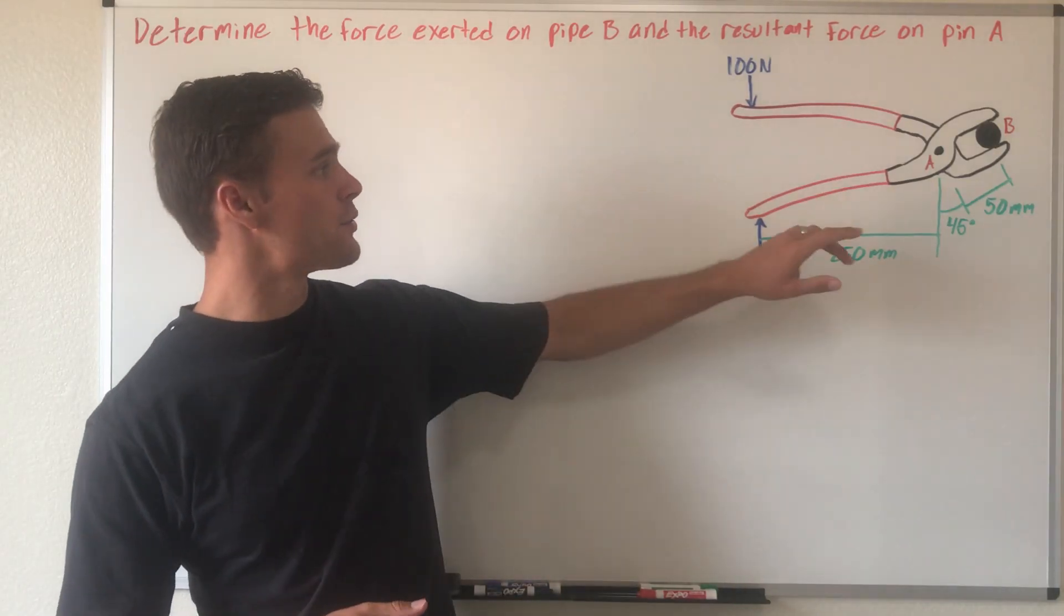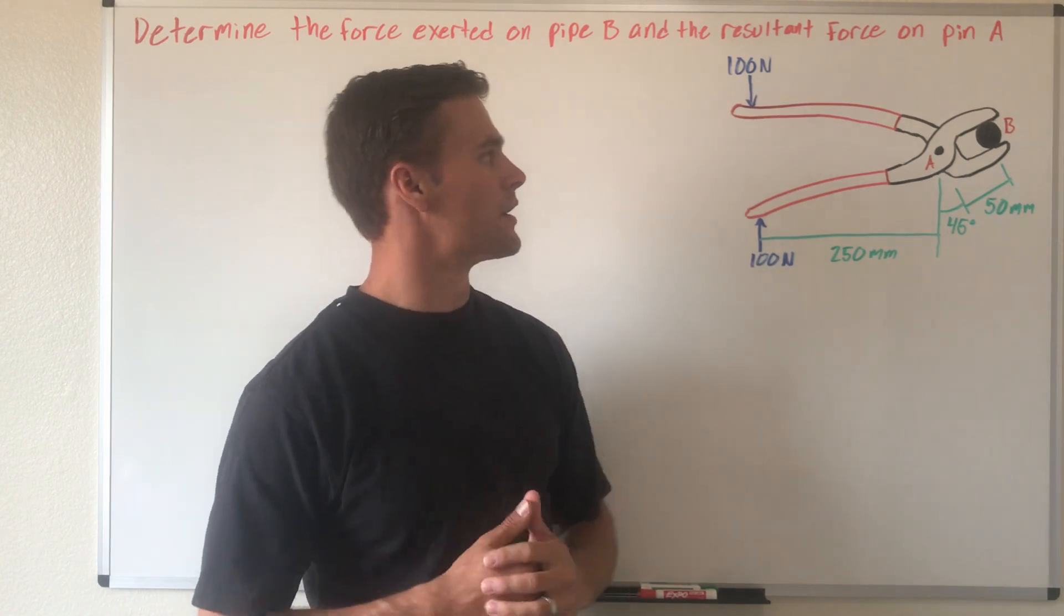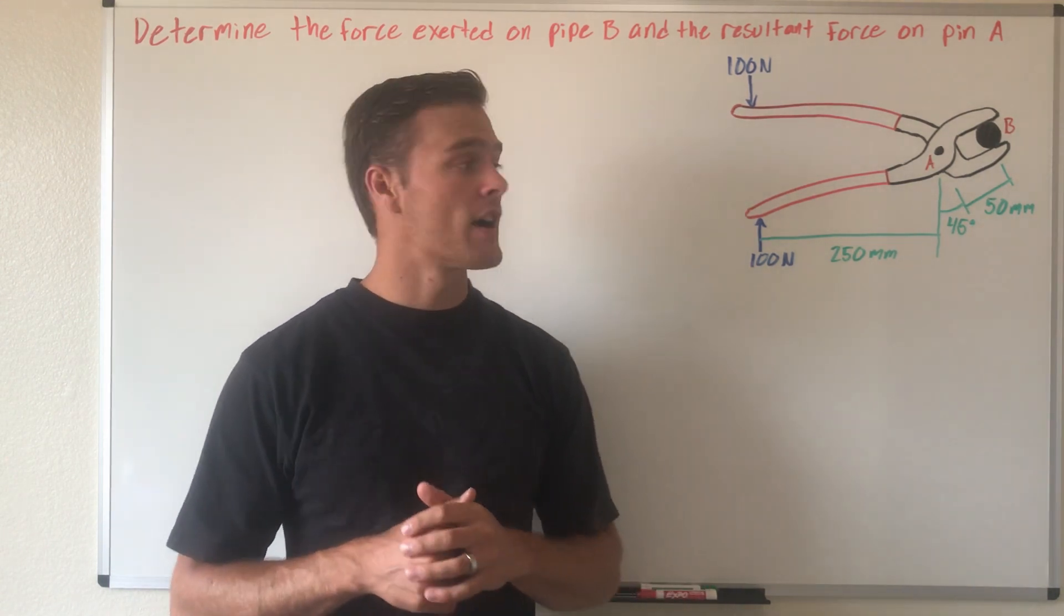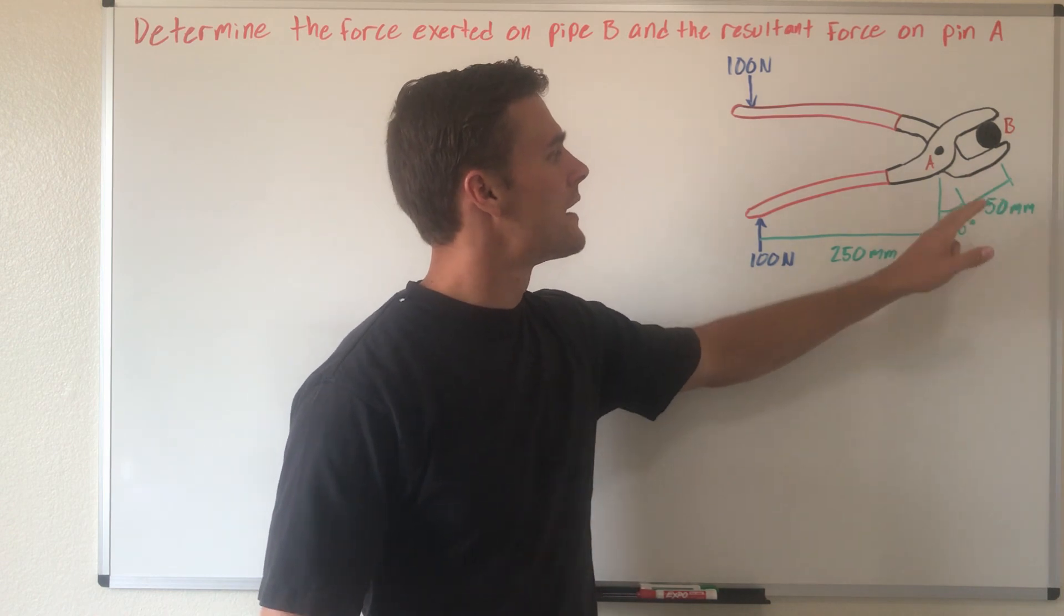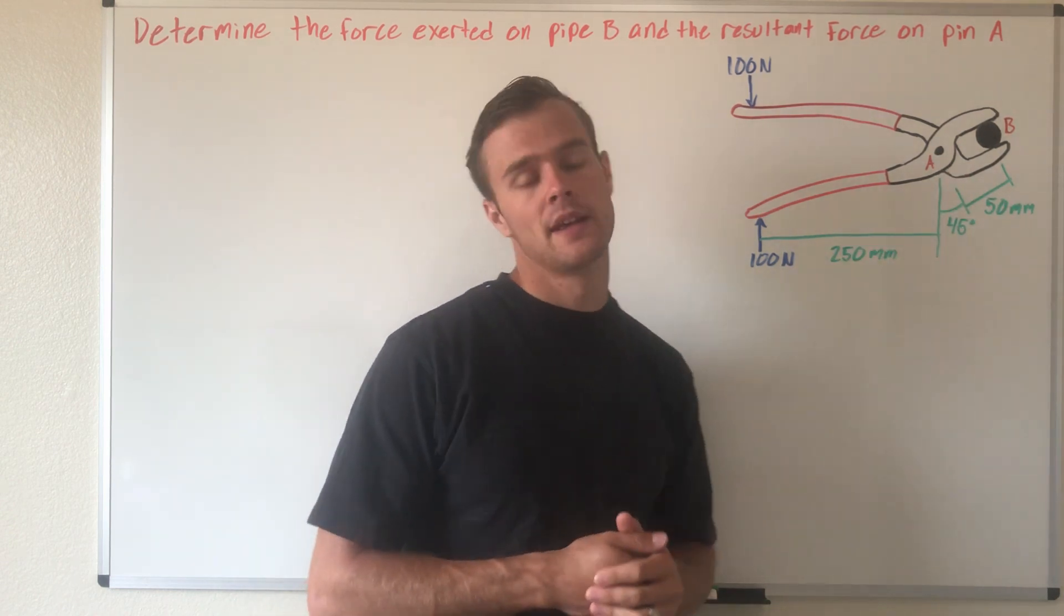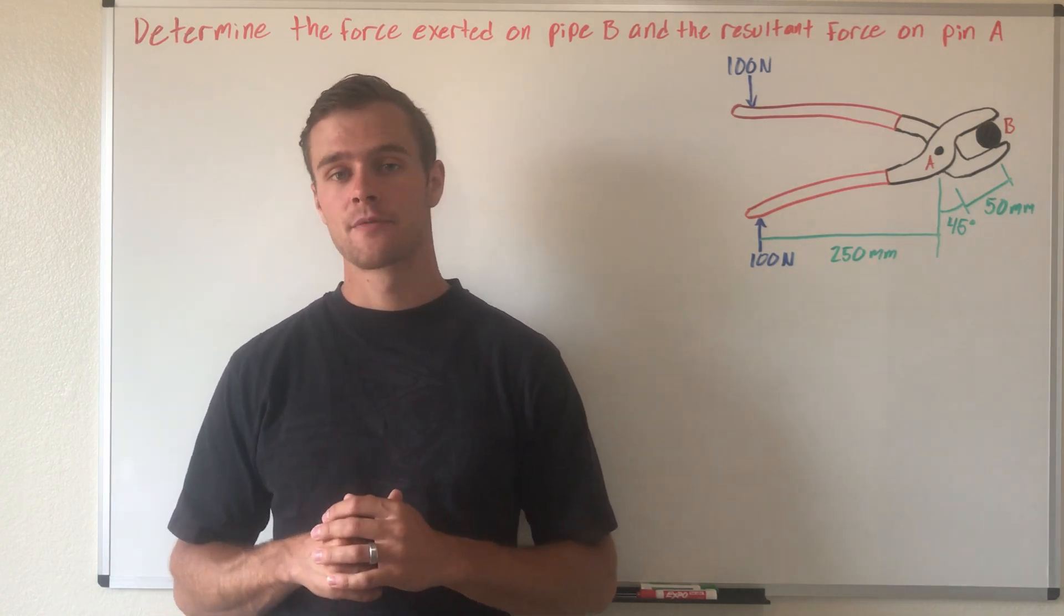So here we have some pliers that are squeezing this pipe B with 100 newtons of force on each of those handles. And what we need to find is the force acting on this pipe B and the reaction force at pin A. And so that's what we're going over in this video.